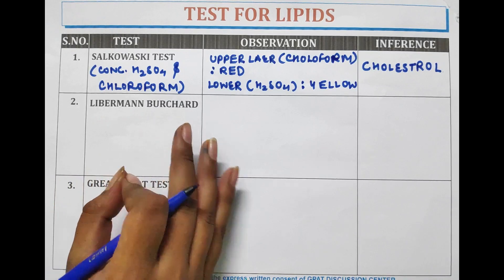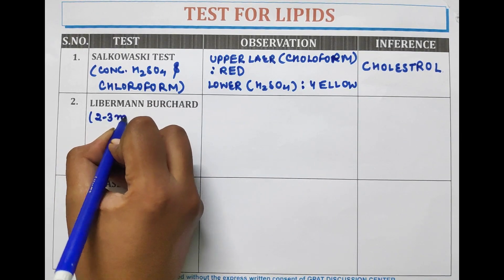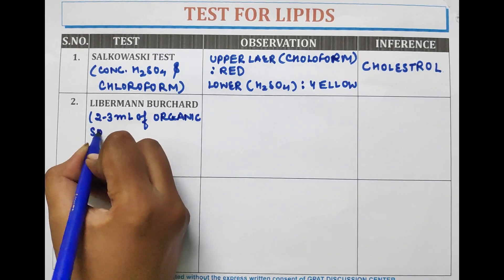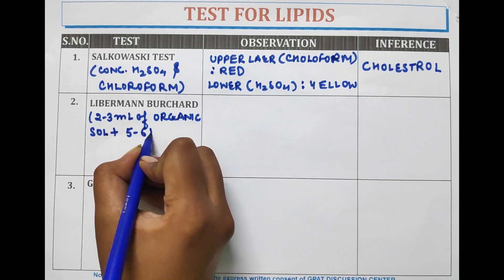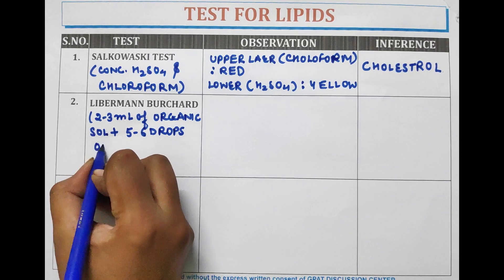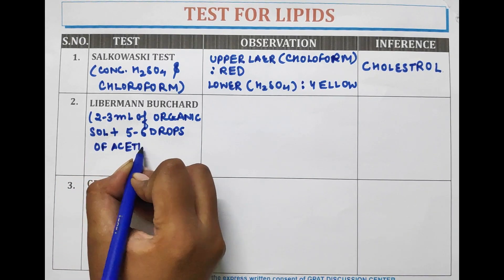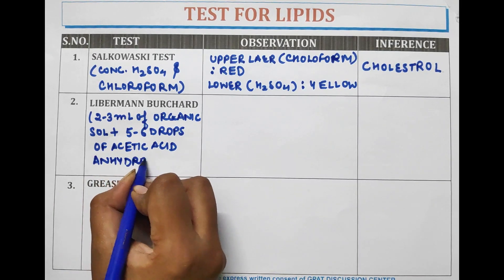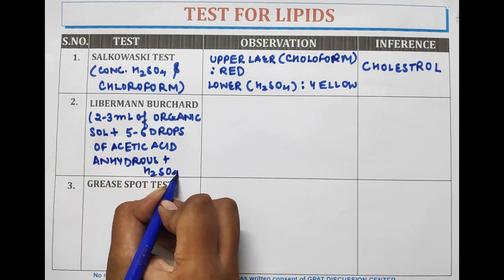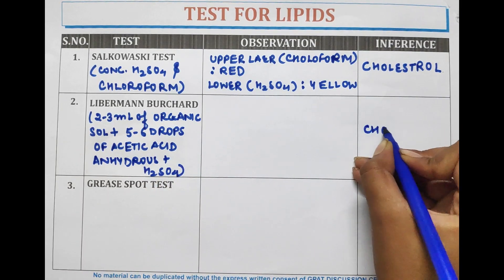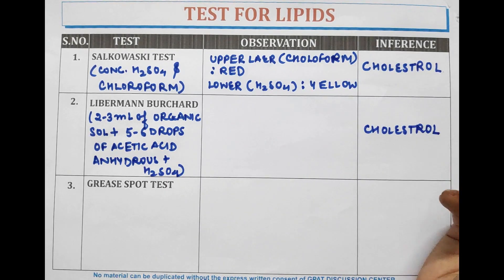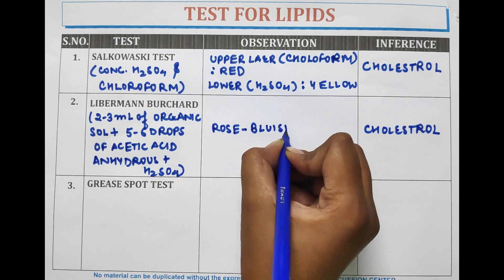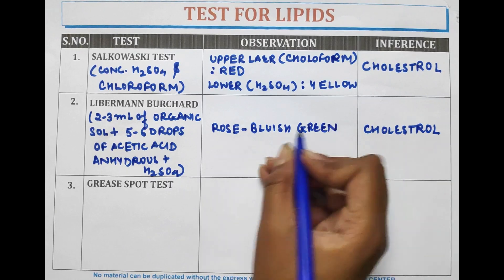The next test is the Liebermann-Burchard test. In this test, 2–3 ml of organic solution is used along with 5–6 drops of acetic anhydride and H₂SO₄. This test is also performed for cholesterol, and if the sample contains cholesterol, then the color changes from rose to bluish green color solution.